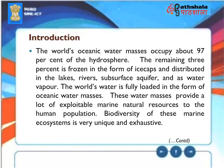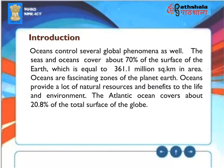Introduction: The world's oceanic water masses occupy about 97% of the hydrosphere. The remaining 3% is frozen in the form of ice caps and distributed in lakes, rivers, subsurface aquifers, and as water vapor. These water masses provide a lot of exploitable marine natural resources to the human population. Biodiversity of these marine ecosystems is very unique and exhaustive. Oceans control several global phenomena as well.